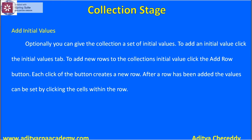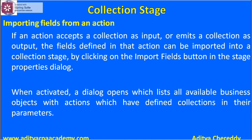Next, we can optionally give the collection a set of initial values. To add an initial value, click the 'Initial Values' tab, then click the 'Add Row' button to add new rows to the collection's initial values. Each click of the button creates a new row, and values can be set by clicking the cells in the row.